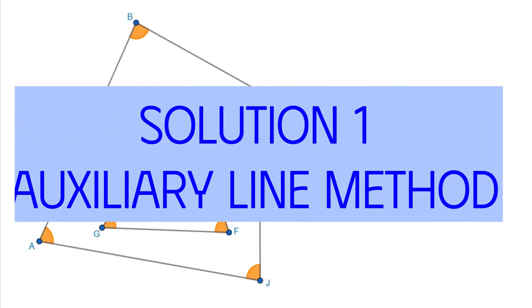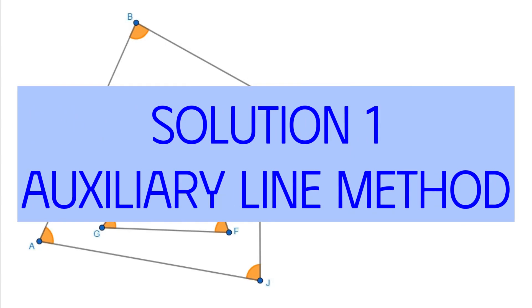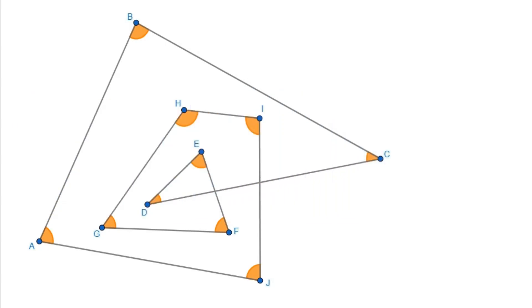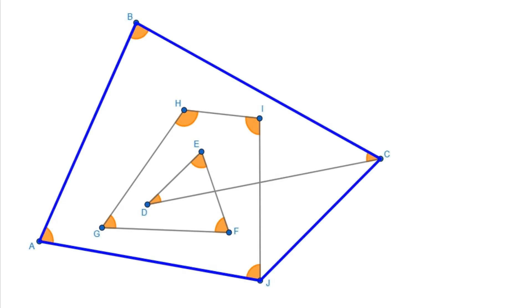Let's start with Solution 1. We call it the Auxiliary Line Method. Start by adding an auxiliary line CJ. This gives us the blue quadrilateral. If we include the two gray angles at C and J, basic geometry tells us that the internal angles of the blue quadrilateral sum up to 360 degrees.